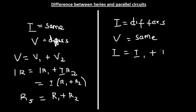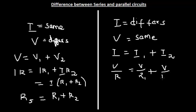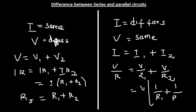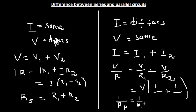In a parallel circuit, the net current is given by I = I1 + I2. Using the relation I = V/R, substituting gives V/R = V/R1 + V/R2. Taking V as a common factor gives 1/R1 + 1/R2. Cancelling V on both sides, the effective resistance Rp satisfies: 1/Rp = 1/R1 + 1/R2.